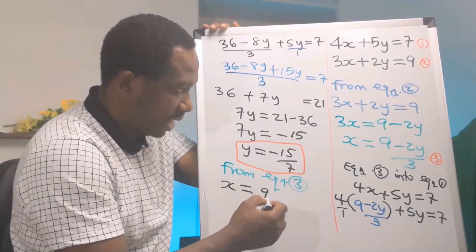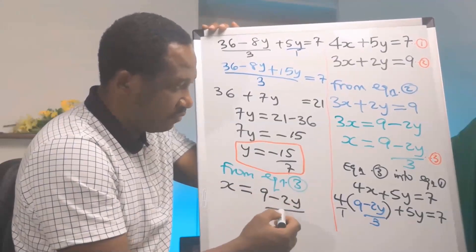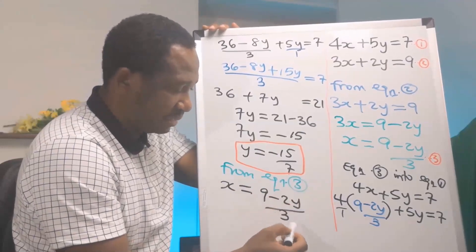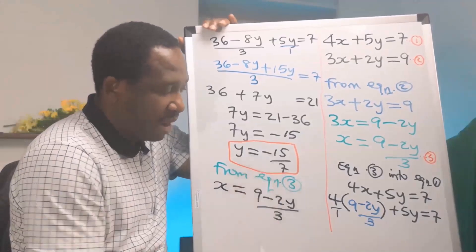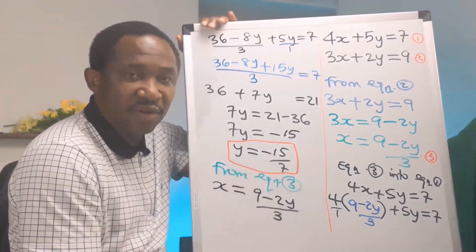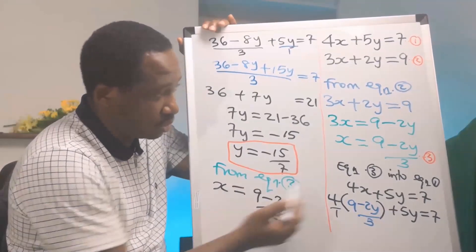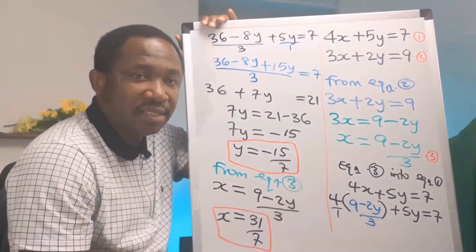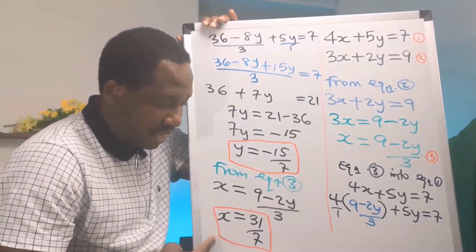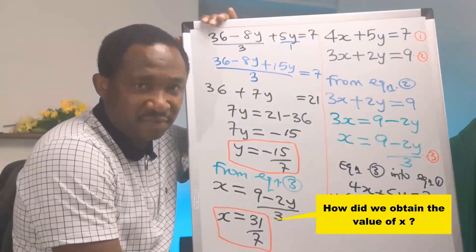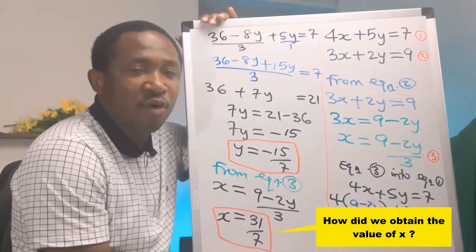Now we have obtained the value for y. From equation 3, x = (9 − 2y) / 3. We substitute y = −15/7 into equation 3 and we get x = 31/7.